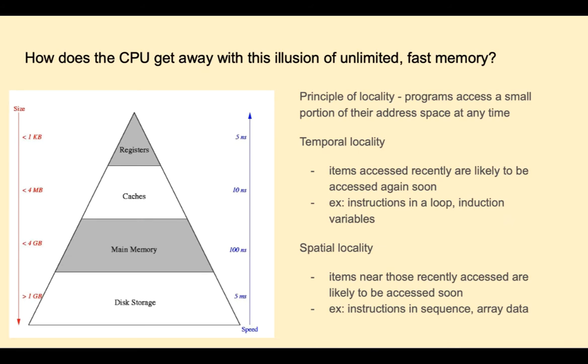The illusion of unlimited fast memory is supported by the memory hierarchy and the principle of locality, which is simply an observation that programs access a small portion of their address space at any time. There are two aspects to the principle of locality: temporal and spatial.